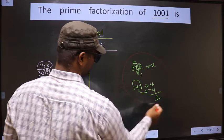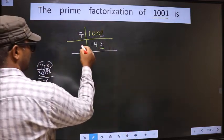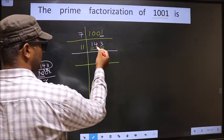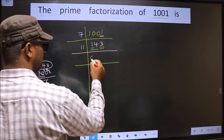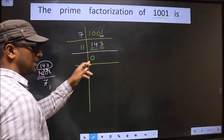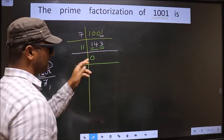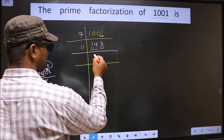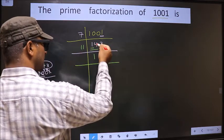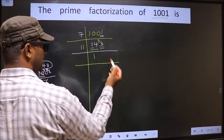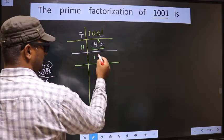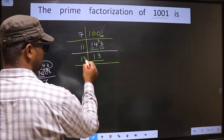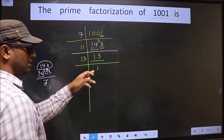So we divide by 11. The first digit 1 is smaller than 11, so we take 2 digits: 14. Whenever we take 2 numbers we would place a 0, but 0 at the start does not count, so no need to write 0 at the start. A number close to 14 in the 11 table is 11 once 11. 14 minus 11 is 3; 3 carried forward making it 33. 11 threes is 33. Now we have 13, which is a prime number, so 13 once is 13, remainder 0. So 143 divided by 11 gives 13.